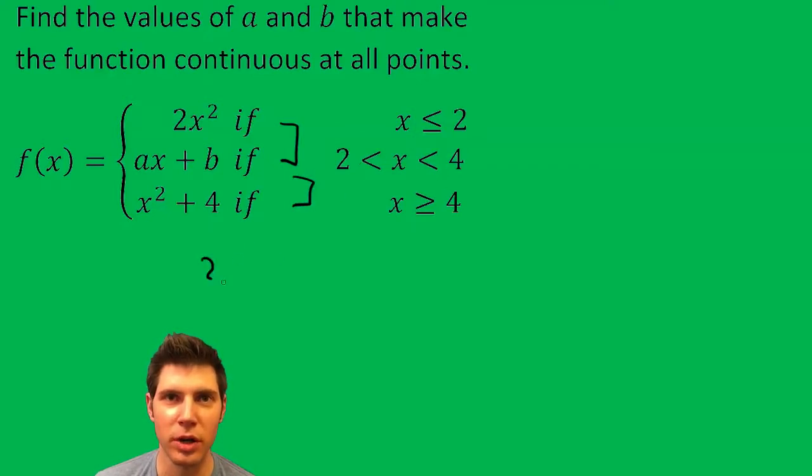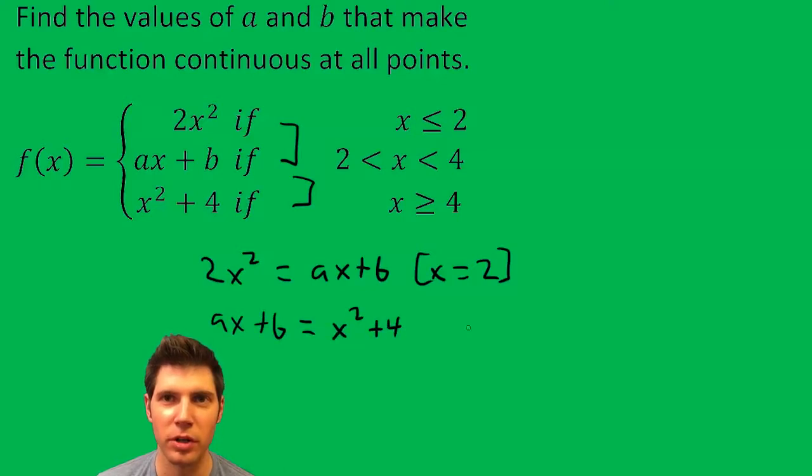So we need two x squared to equal a x plus b when x equals two. And we need a x plus b to equal x squared plus four when x equals four.